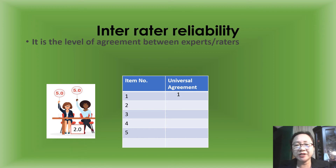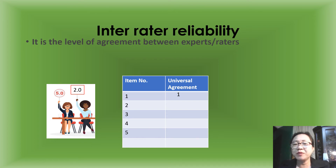Let's look at item number 2. The other expert gives a score of 2, meaning they are no longer in agreement. So we give item number 2 a score of 0.